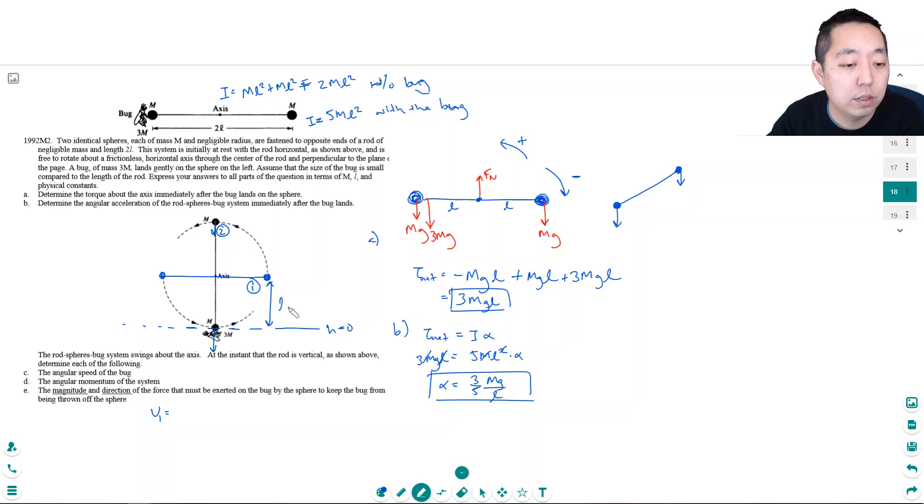For potential energy, you always want to establish a baseline. We're going to say this is h equals zero. Its potential gravitational energy at this state is... actually, it's not 2mg, it's 5mg because there's a 3m over here and the m over here.